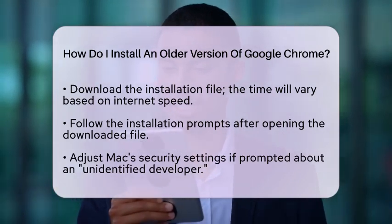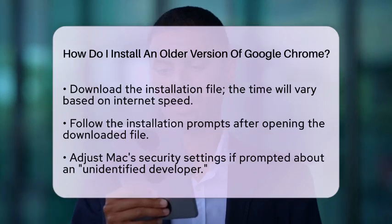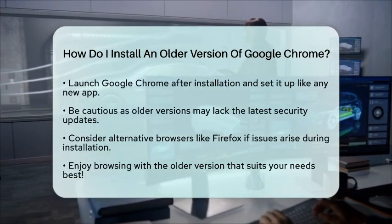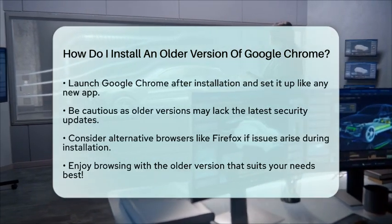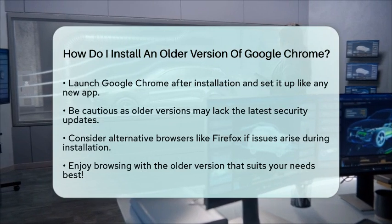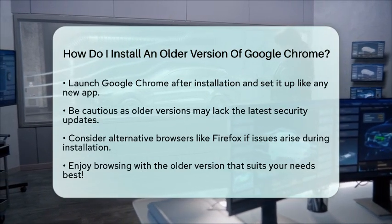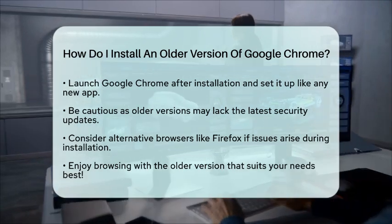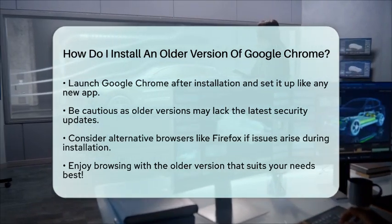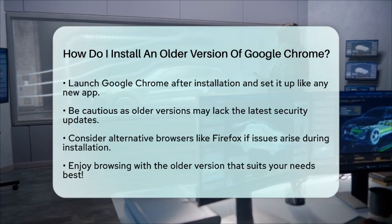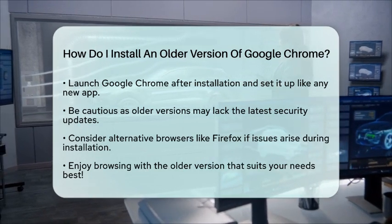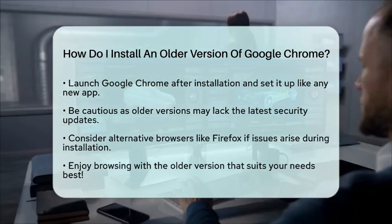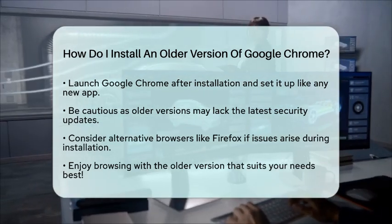Keep in mind a few important considerations. Older versions of Chrome may lack the latest security updates, so be cautious while using them. Also, double-check that the version you choose is compatible with your operating system and any other software you plan to use. If you run into any issues while installing an older version of Chrome, consider trying alternative browsers like Firefox. Firefox supports older versions of Mac OS, including Catalina, and may be a suitable option for you.